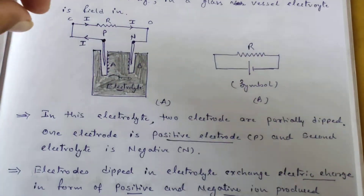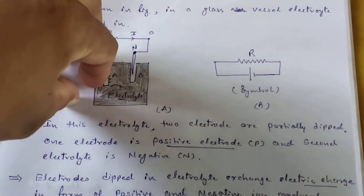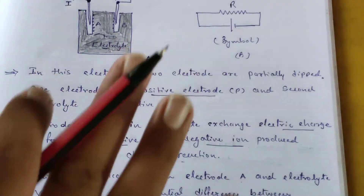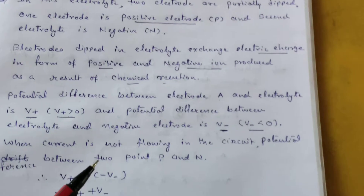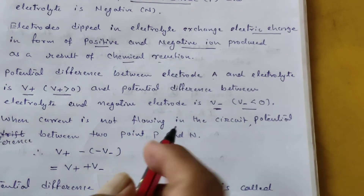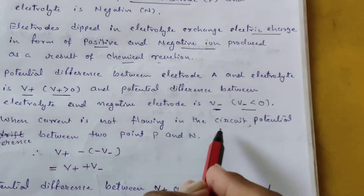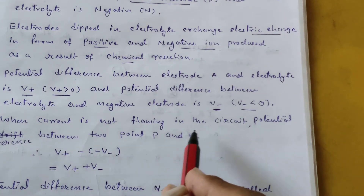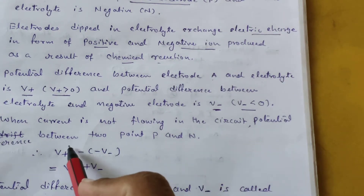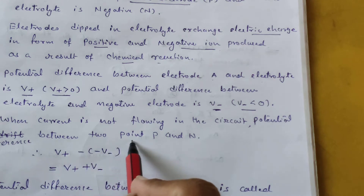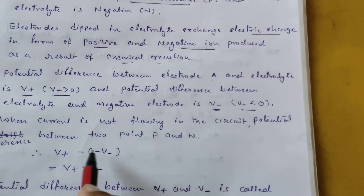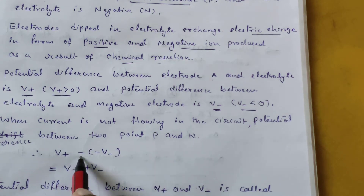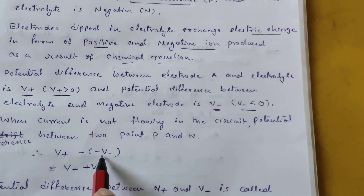When current is not flowing, there is no potential difference. The potential difference between the two points is nothing but V+ minus V−.